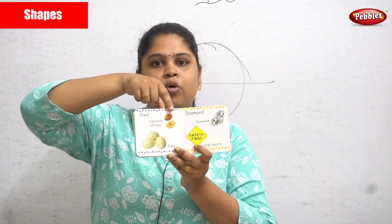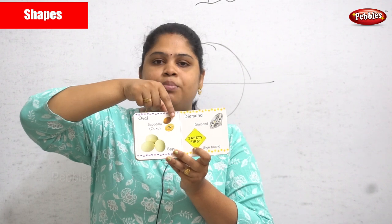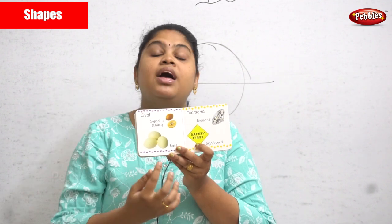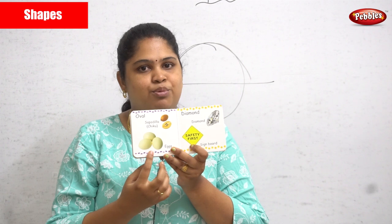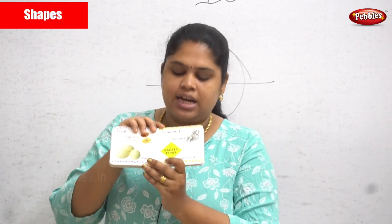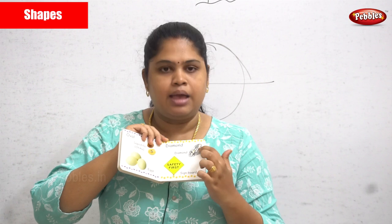Next is the oval shape. Your food support fruit is in an oval shape, and an egg is a great example of an oval shape.